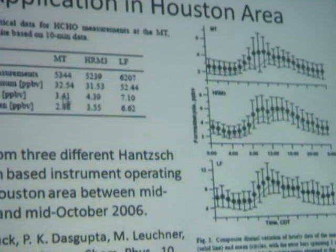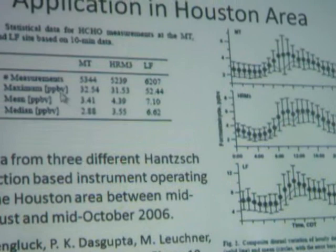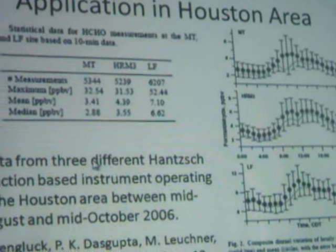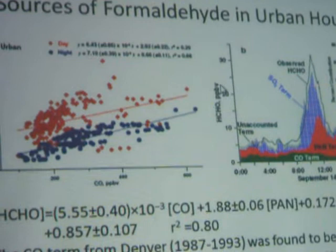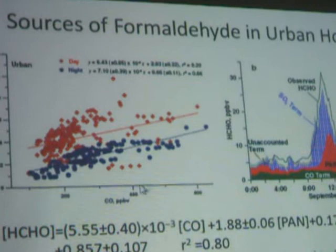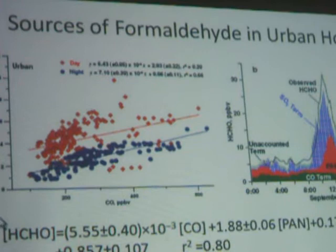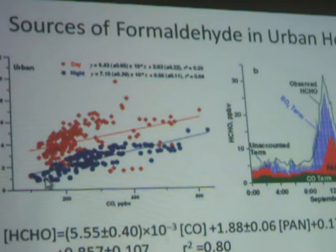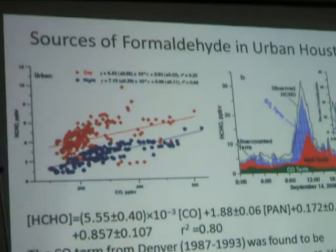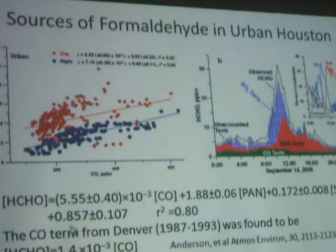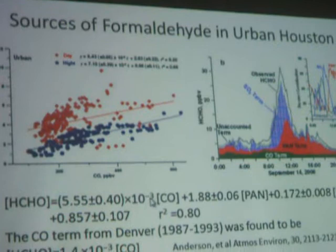The median concentration is in the three to six parts per billion range for these samples. This system is based on just one compound — formaldehyde — so you can get better time resolution. The techniques have been applied a fair amount in Houston to look at formaldehyde sources. This particular paper is trying to sort out primary versus secondary sources of formaldehyde by looking at how formaldehyde concentrations relate to other tracers.